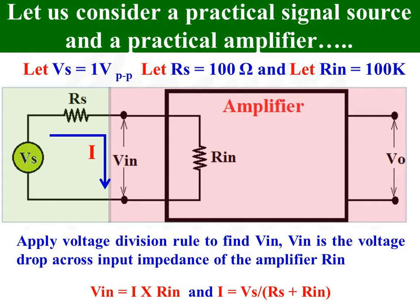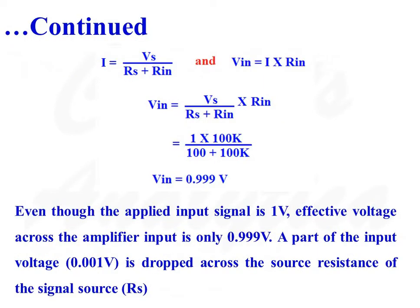We can write VIN is equal to I multiplied by RIN, by application of Ohm's Law. And current I can be written as total voltage divided by total resistance, that is I is equal to VS divided by RS plus RIN. Therefore VIN is equal to VS divided by (RS plus RIN), multiplied by RIN.